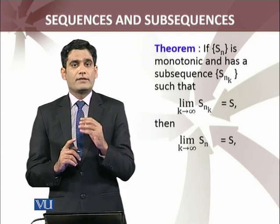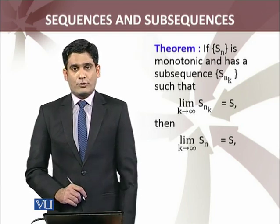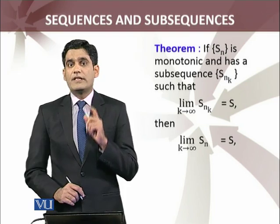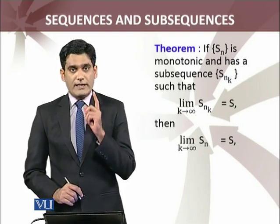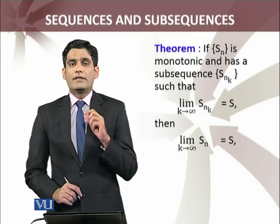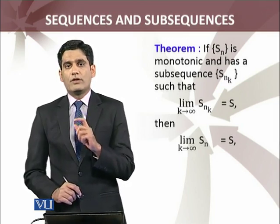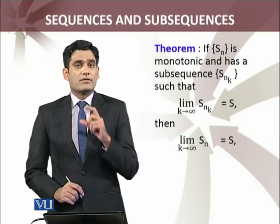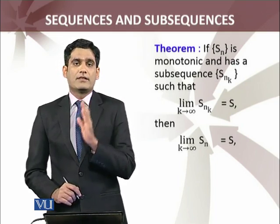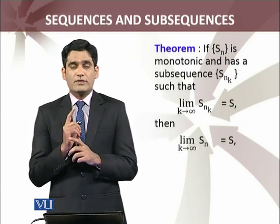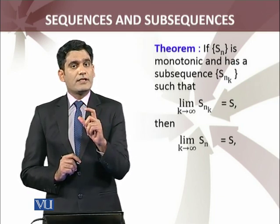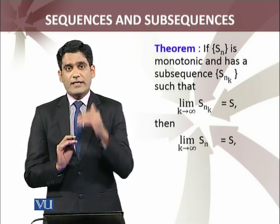Let's formulate this as a theorem mathematically. If sn is a monotonic sequence and has a subsequence s_{n_k} — where n_k is an increasing sequence of integers — such that the limit as k approaches infinity of s_{n_k} equals s, then the sequence sn converges to the same limit s as n approaches infinity. This result is true only for monotonic sequences; without monotonicity, a convergent subsequence does not guarantee the parent sequence converges.